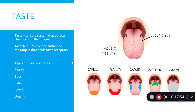Taste is a sensory system that detects chemicals on the tongue. Like other sensory systems, it has specific mechanisms — taste buds — that are attuned to respond to specific stimuli. The tongue responds to five stimuli: sweet, salty, sour, bitter, and umami. Sweet is detected at the front of the tongue, salty in the front sides, sour on the sides, bitter at the back, and umami provides that full, savory flavor.